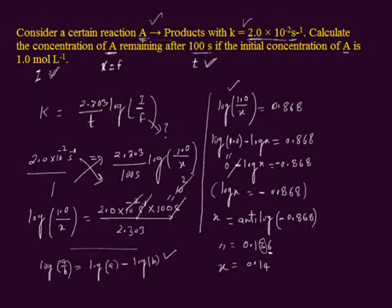This is the remaining amount of reactant A after 100 seconds. You can see that the unit of initial concentration of reactant A is given in mole per liter, that's why the remaining amount of reactant A after 100 seconds will also be in mole per liter.